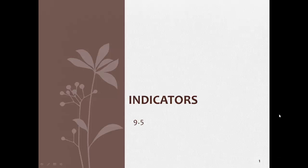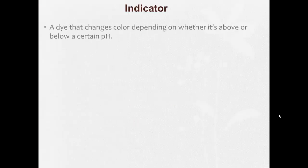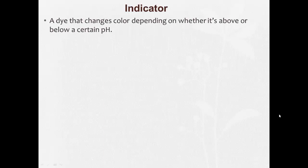9.5 indicators. So an indicator is a dye that changes color depending on whether it's above or below a certain pH.